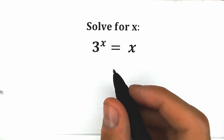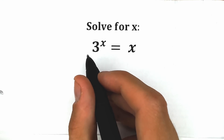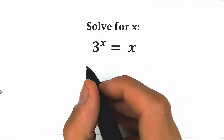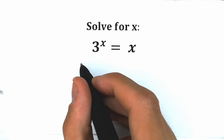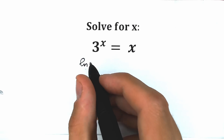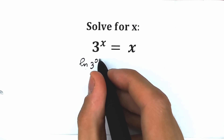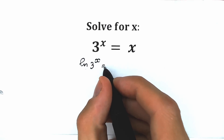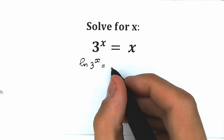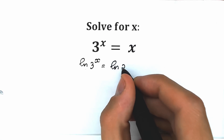First of all, let's apply the natural log on both sides. On the left side we take natural log of 3 to the power x, and we have the same thing on the right side. So we need to apply this natural log on the right side as well.